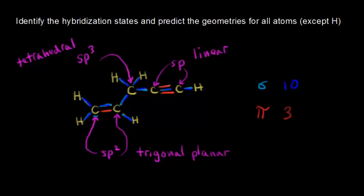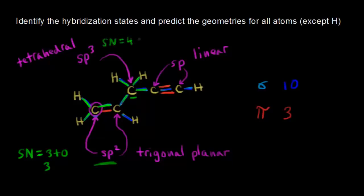You can also find hybridization states using steric number. Going back to this carbon, steric number is equal to the number of sigma bonds plus lone pairs of electrons. There are three sigma bonds around that carbon. Three plus zero gives a steric number of three. Therefore, I need three hybrid orbitals, and sp2 hybridization gives three hybrid orbitals. For the sp3 carbon, counting gives one, two, three, four sigma bonds and zero lone pairs of electrons — a steric number of four, meaning I need four hybrid orbitals, which corresponds to sp3 hybridization.